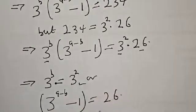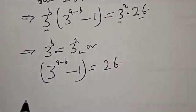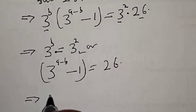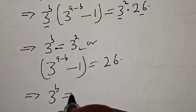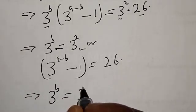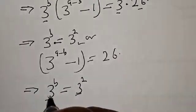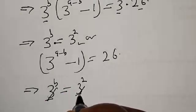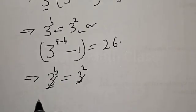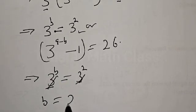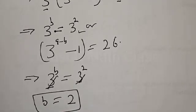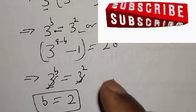From 3 to power b equal to 3 squared, since they have the same base, the bases cancel. Therefore b is equal to 2. We've now found the value of b to be 2.